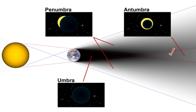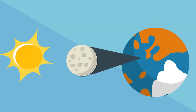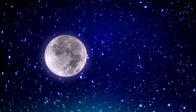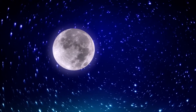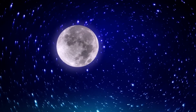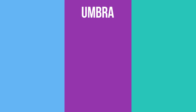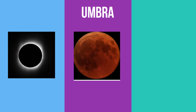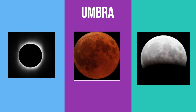Depending on where the Earth and Moon is found — which part of the shadow — you get different types of eclipses. If the Earth or Moon is found in the Umbra, you get a total solar eclipse, a total lunar eclipse, and also a partial lunar eclipse.